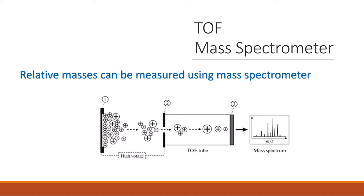First of all, in the mass spectrometer, the atoms or molecules have to be ionized to give positively charged ions. They have different masses and different sizes. Then they are accelerated, and they drift through the time-of-flight tube. Finally, they reach a detector and produce what we call a mass spectrum. Let's have a closer look at the different stages to understand how it works.